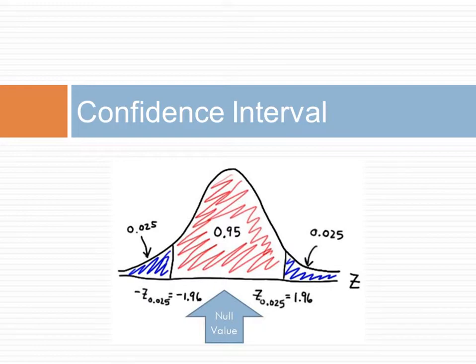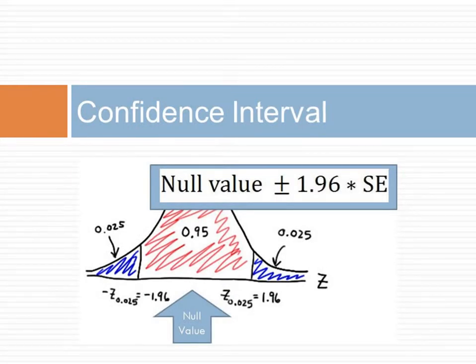Imagine a distribution around the hypothesized null value, where the hypothesized null value is the mean of the distribution. We can use a confidence interval to test if the sample value can be observed within the 95% confidence interval of the hypothesized null value. We will make an error whenever the point estimate is at least 1.96 standard errors away from the hypothesized null value. This happens about 5% of the time — 2.5% in each tail. So a confidence interval can be used to test the hypothesis.